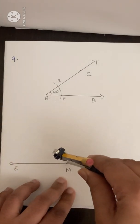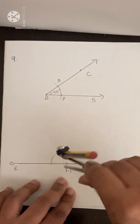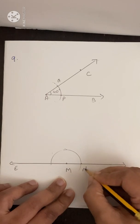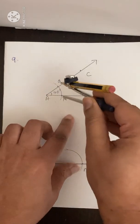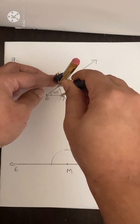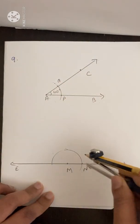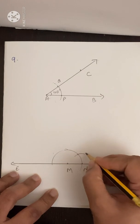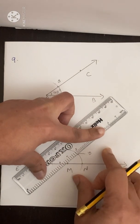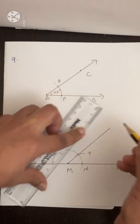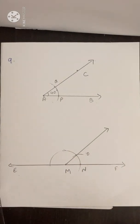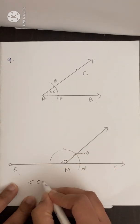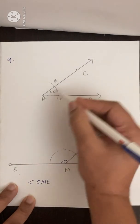With the same radius, with M as center, draw an arc on the line and let this point be N. Now take the radius of PQ — we are going to copy the 40 degree angle. With M as center draw an arc and let it be O. Join M and O. The supplementary angle here is angle OME — this is the supplementary angle of angle CAB.